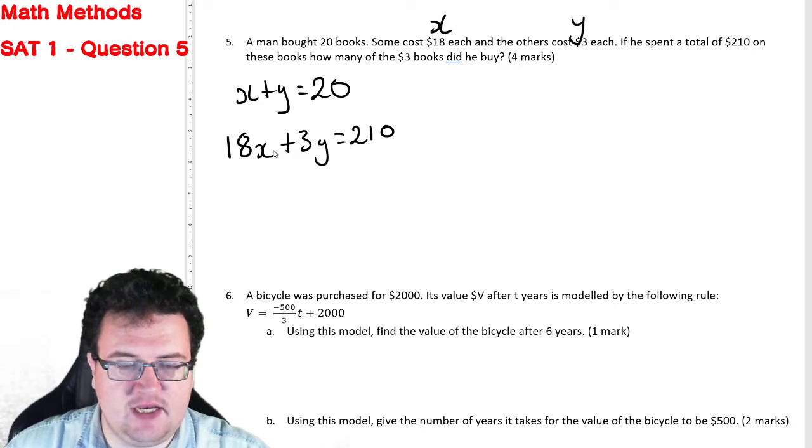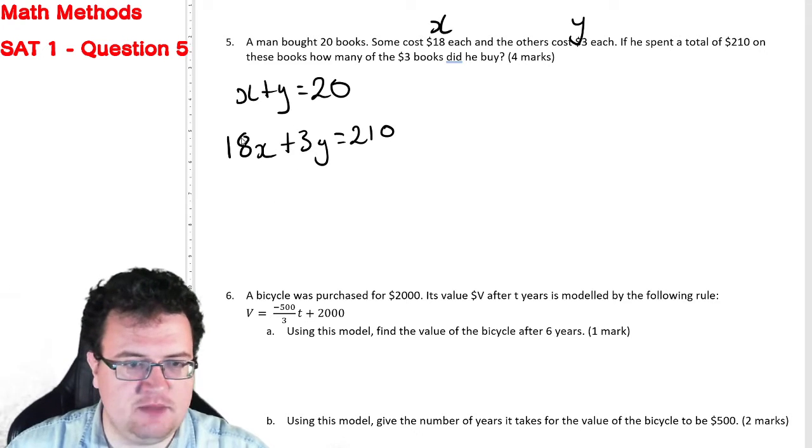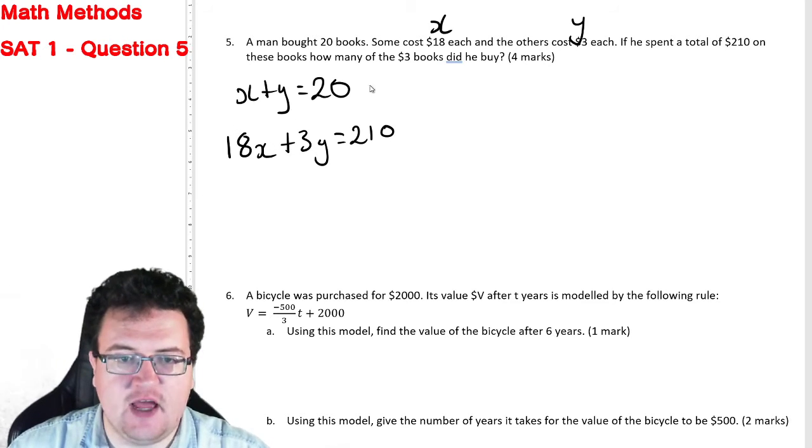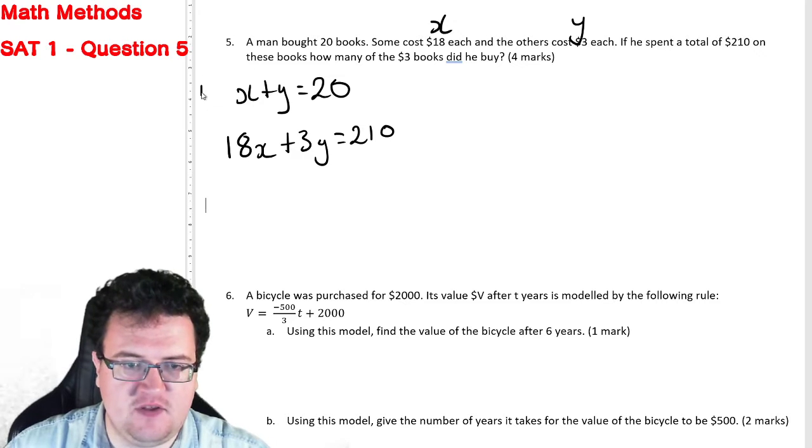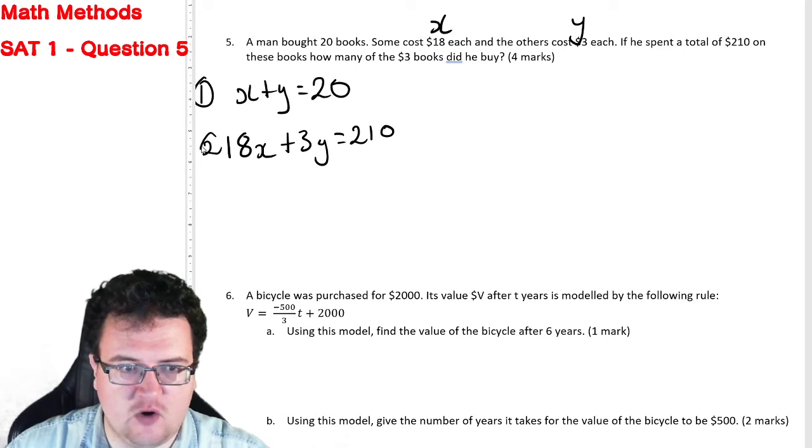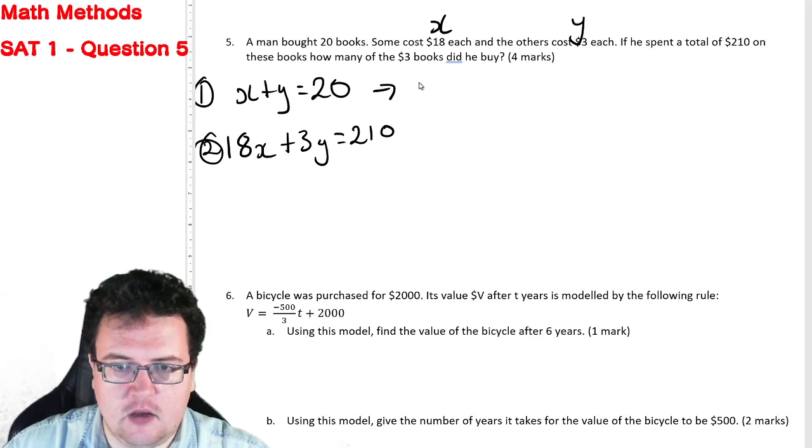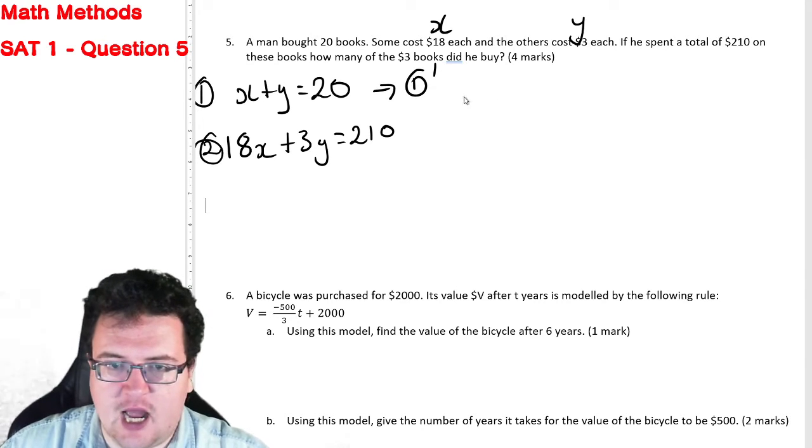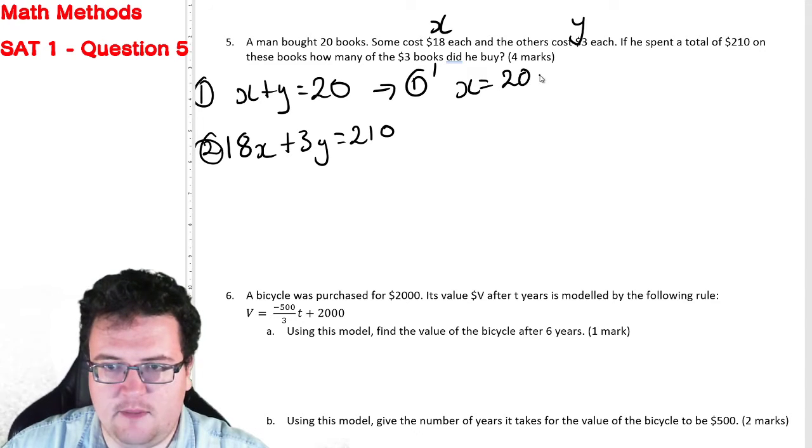All right, and the way we're going to do that, the easiest way that just simply ignores the X altogether is by rearranging this equation here, rearranging equation one, creating one dash, and it's going to be X equals 20 minus Y.